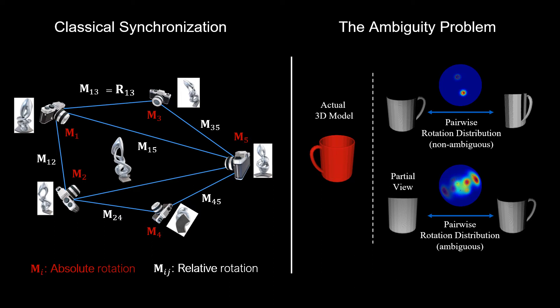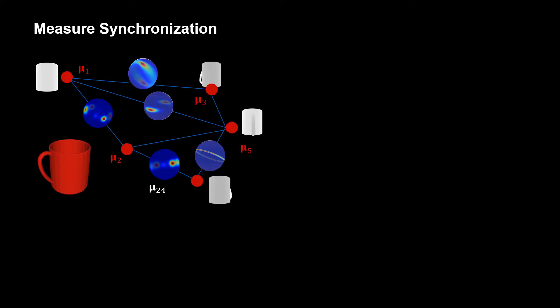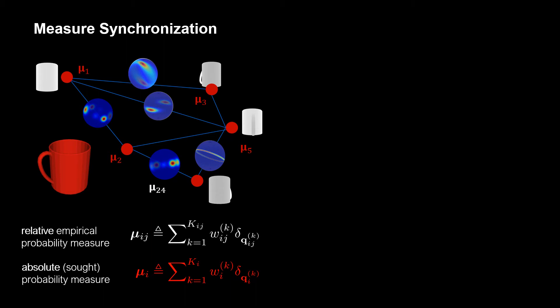we speak of a distribution characterizing the family of solutions. We consider the synchronization problem, where the edges are the observed relative probability measures on rotations, and seek the absolute measures defined by the nodes.